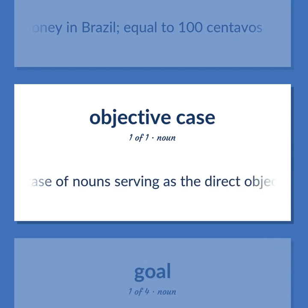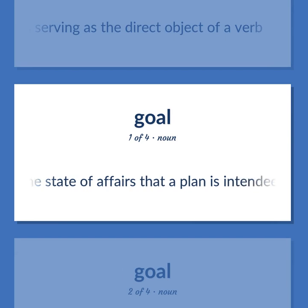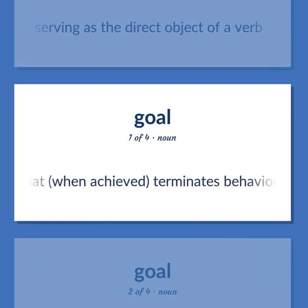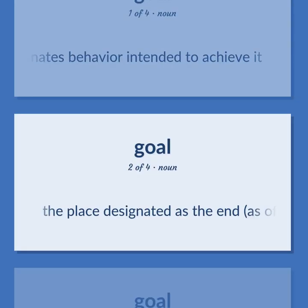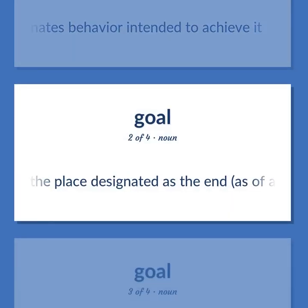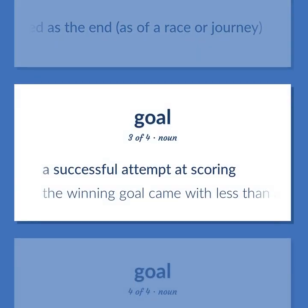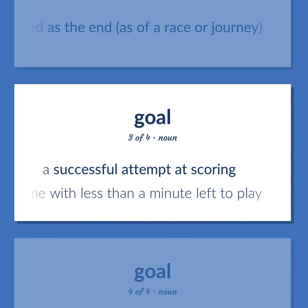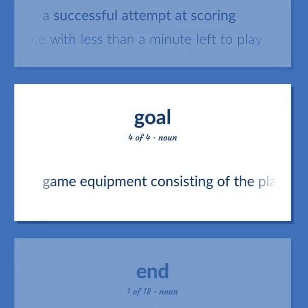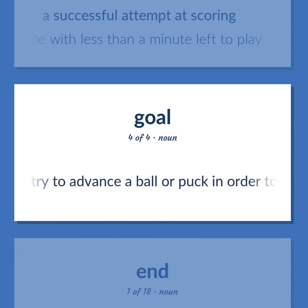The case of nouns serving as the direct object of a verb. Goal: the state of affairs that a plan is intended to achieve and that, when achieved, terminates behavior intended to achieve it. The place designated as the end, as of a race or journey. A successful attempt at scoring. The winning goal came with less than a minute left to play. Game equipment consisting of the place toward which players of a game try to advance a ball or puck in order to score points.